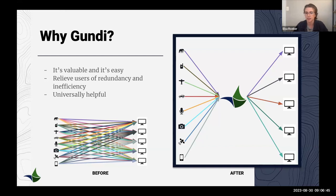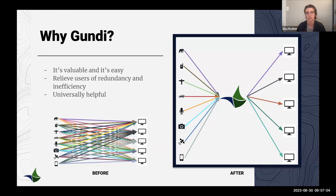Once a certain technology type is supported through Goondi, any user with that same type of device or source can create their own instance of a Goondi connection. They can benefit from the integration we've already developed, and mutually benefit each other as we support more and more types of technology.